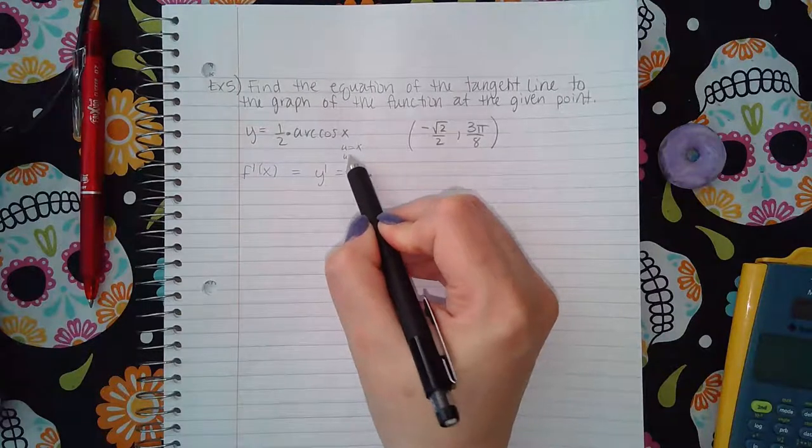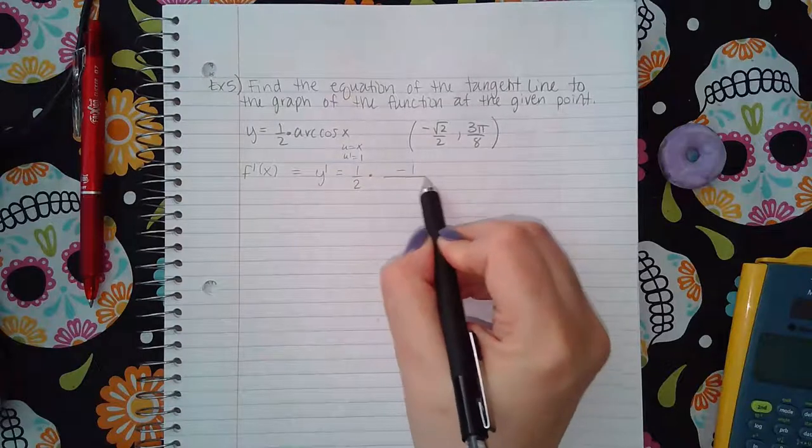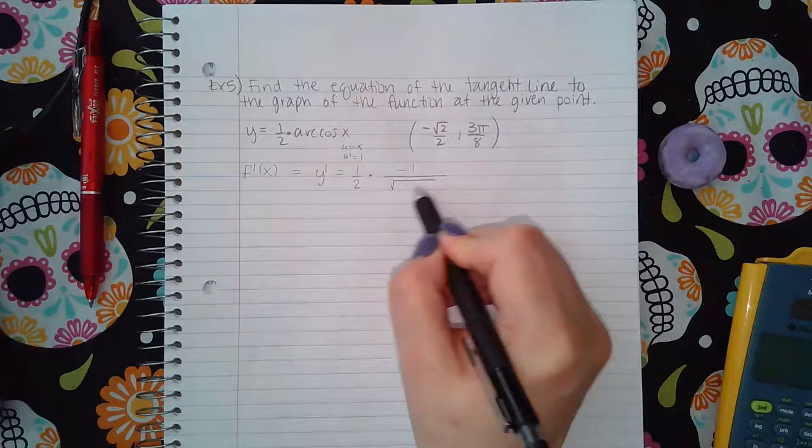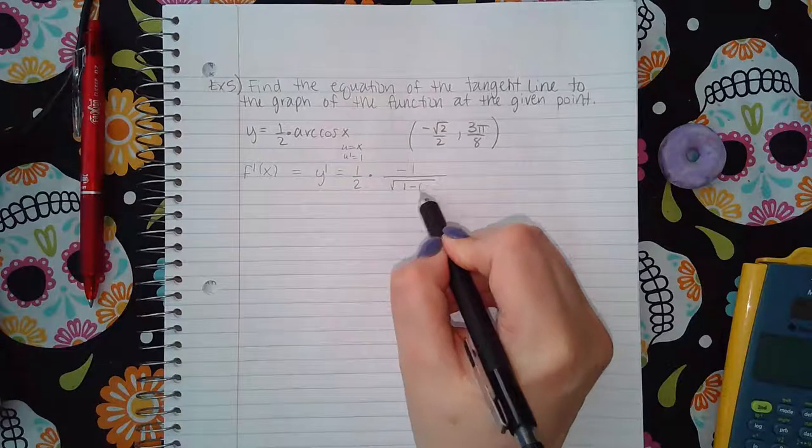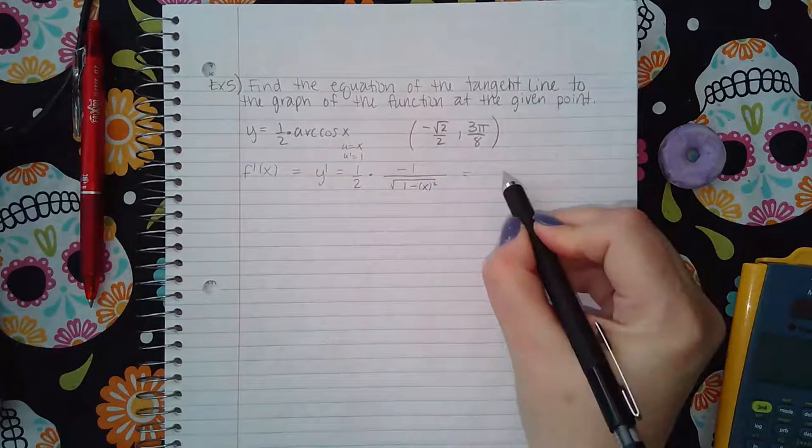I'm going to use the formula. Let's see, u is equal to x, so then u prime would just be one. So the formula would be negative u prime, so negative one, over the square root of one minus u, which is x squared.